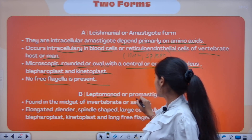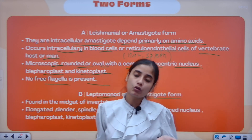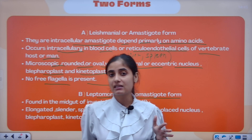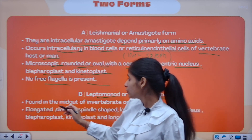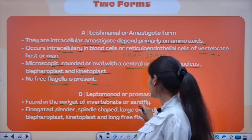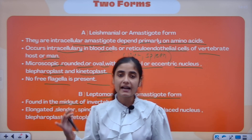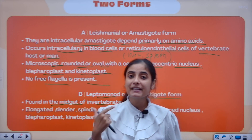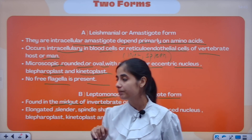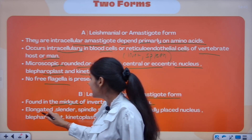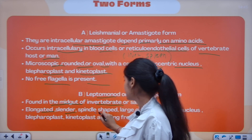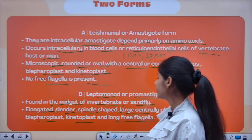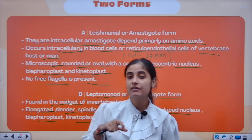The Promastigote form, also called the Leptomonad form, is found in the midgut of the invertebrate sandfly. In the sandfly life cycle, the Promastigote form is elongated, cylindrical or spindle-shaped, with a large centric nucleus, blepharoplast, kinetoplast, and a long free flagellum.